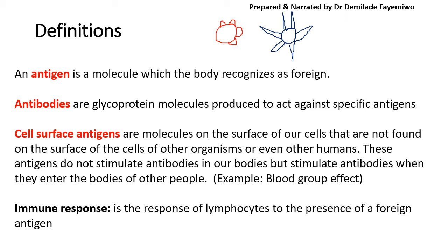Antibodies are glycoprotein molecules that are produced to fight infection. They are really important because they act against specific antigens, and your body is then able to say, these antibodies already exist, so if the same antigens come again, the antibodies are able to attack them more effectively. You also have cell surface antigens — those are the antigens found on the surface of your own cells, and they are not found on the surface of other organisms or even other humans.